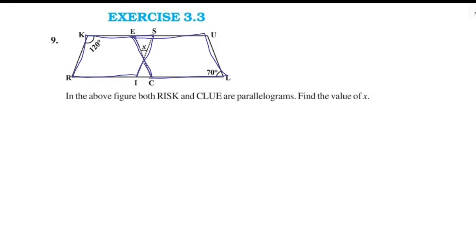With two parallelograms, we need to find the angle x. A key property of a parallelogram is that adjacent angles are supplementary — that is, the adjacent angles sum to 180 degrees.